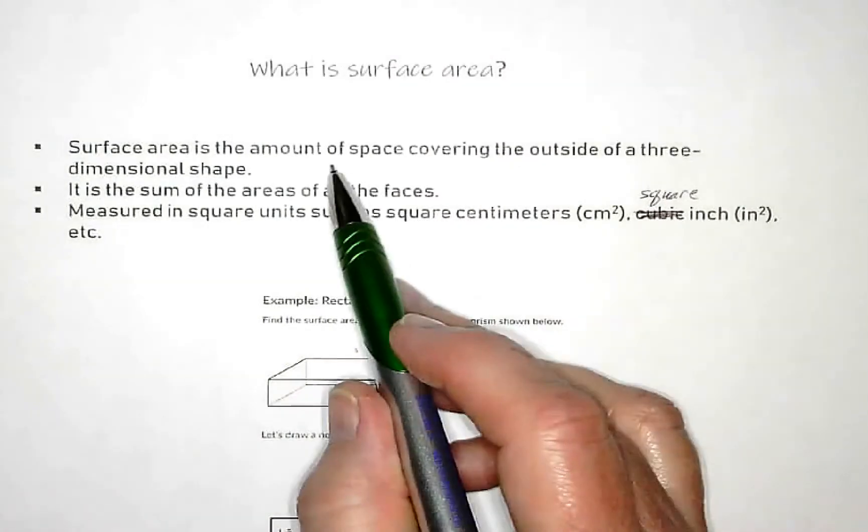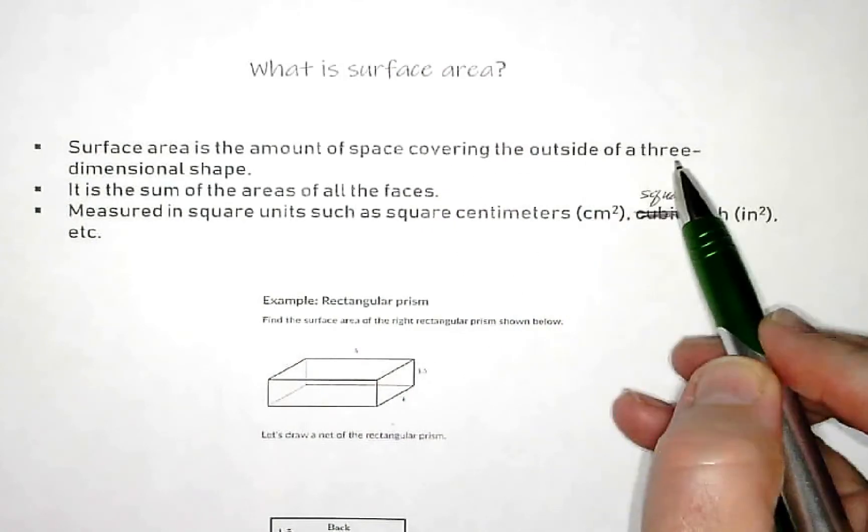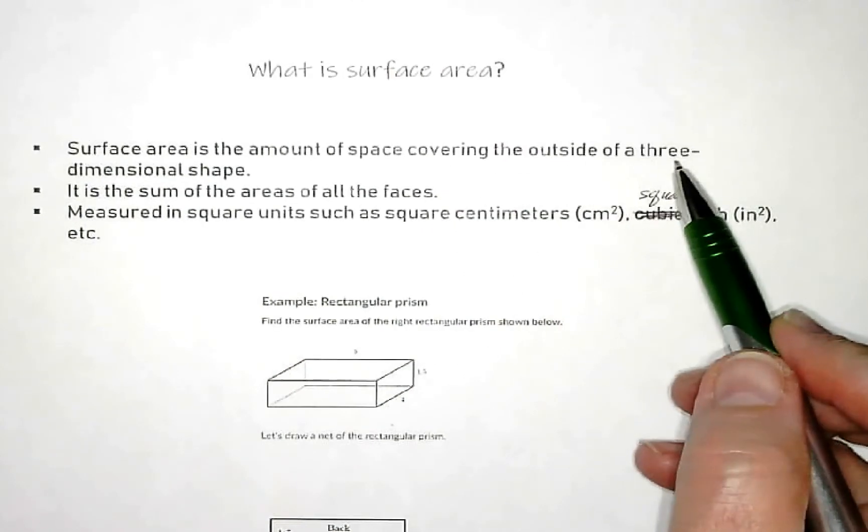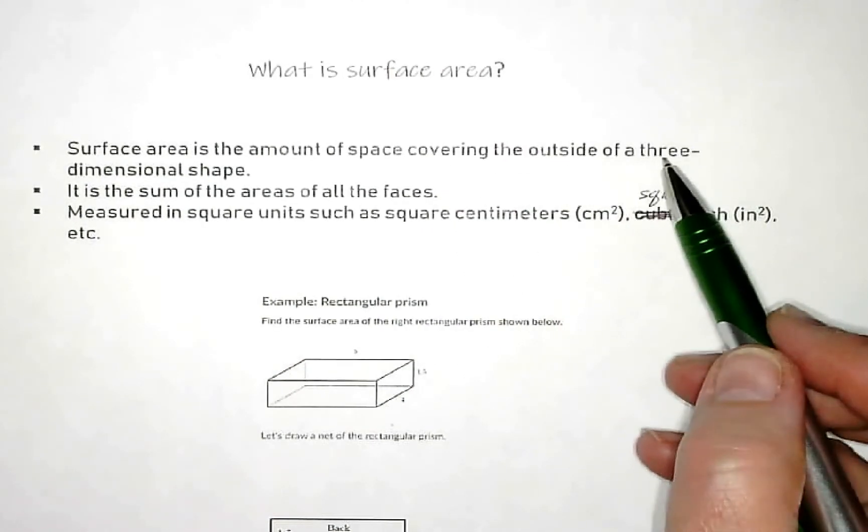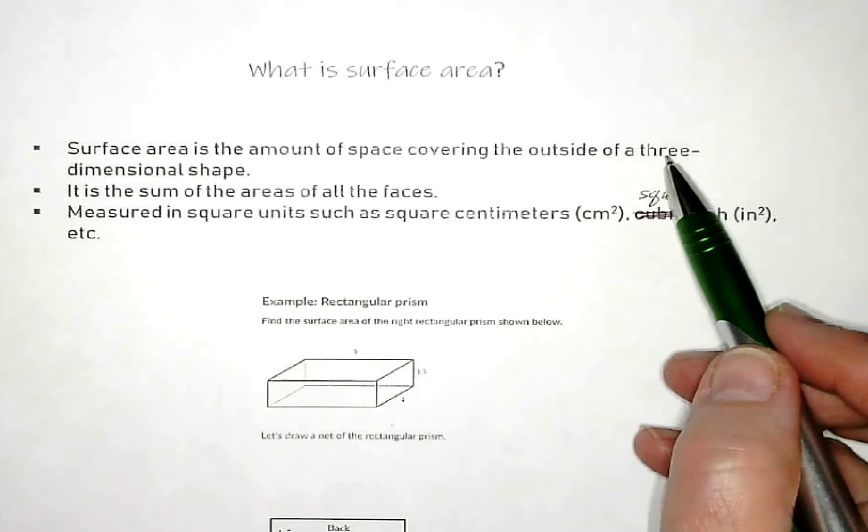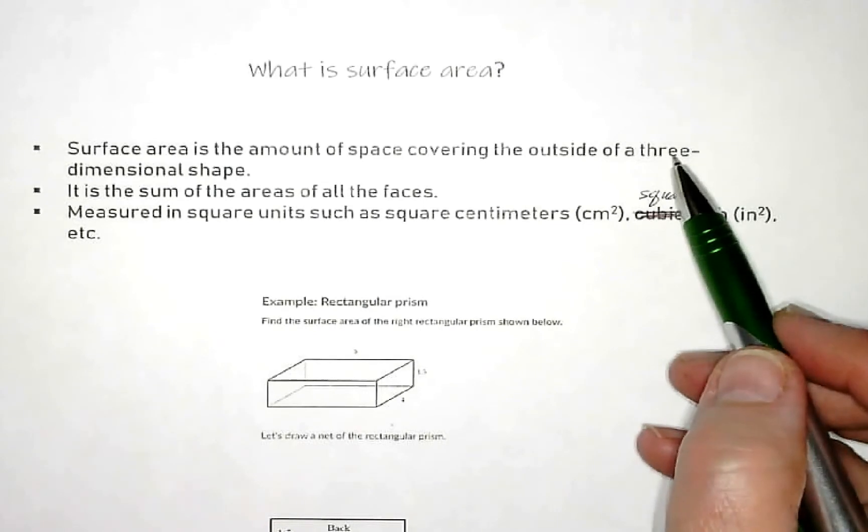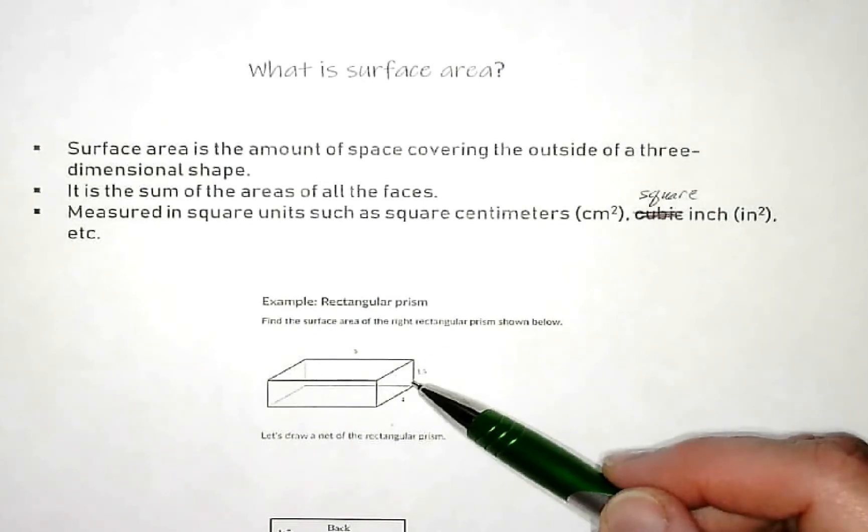So when it says the surface amount is the space covering the outside of the 3D shape, it would be like wrapping a present. How much wrapping paper does it take to cover all six sides, all six faces of that package?